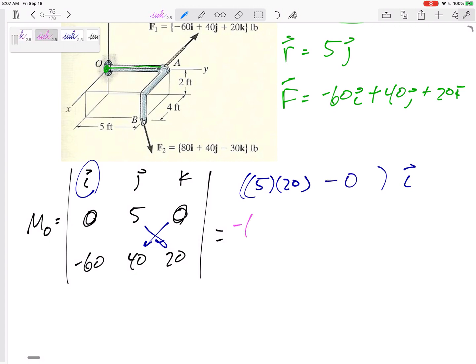My negative j component is going to be 0 times 20 minus 0, 0 minus 0, alright? So it is kind of simplifying a bit.